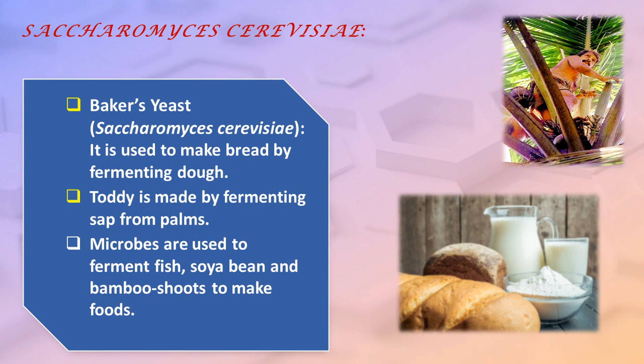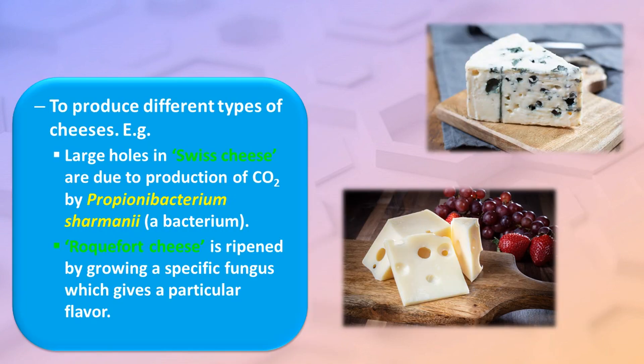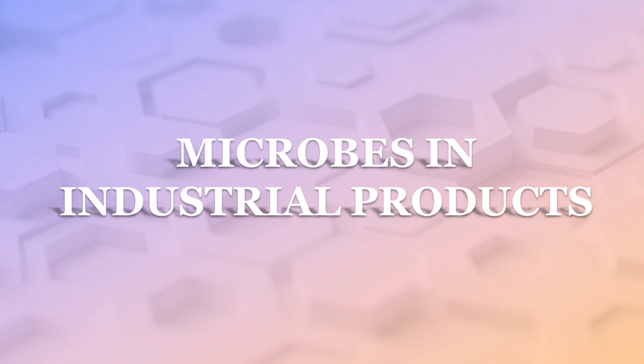Toddy is made by fermenting sap from palms. Microbes are used to ferment fish, soybean, and bamboo shoots to make foods. Microbes are also vitally used in the production of different types of cheese. For example, large holes in Swiss cheese are due to the production of CO2 by Propionibacterium sharmanii. Roquefort cheese is ripened by growing a specific fungus, which gives it a particular flavor.